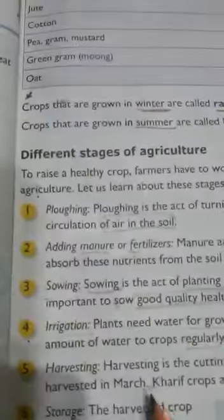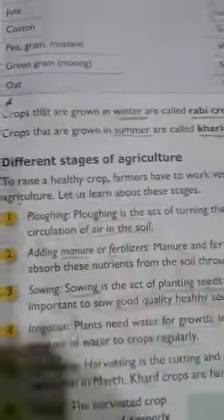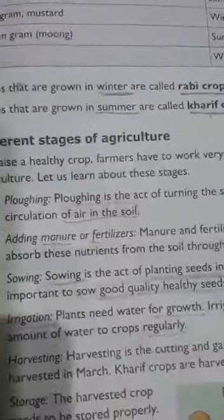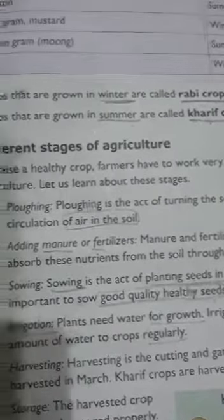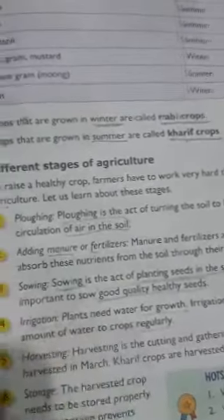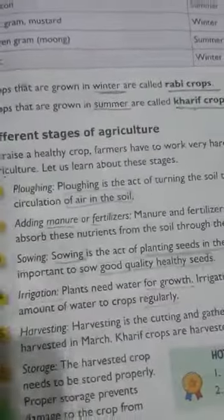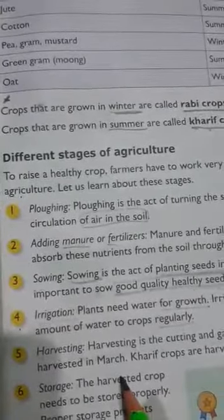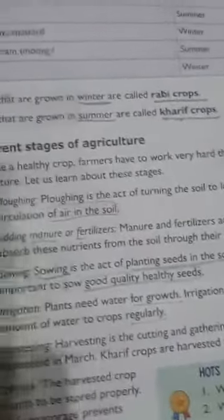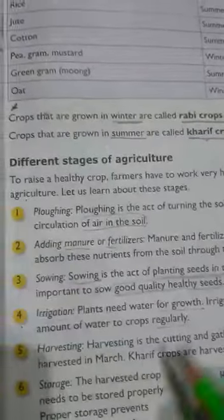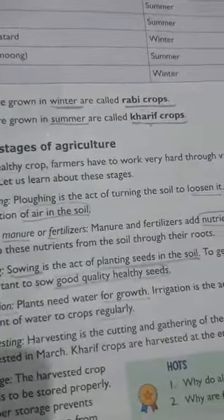The fifth stage is harvesting. Harvesting is the cutting and gathering of ripe crops. Rabi crops are harvested in March, and kharif crops are harvested at the end of the monsoon season. Rabi crops are the crops that are grown in winter.